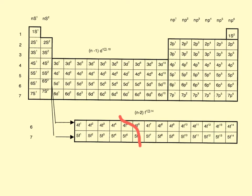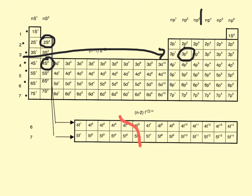Every element has a unique ending of the electron configuration. Whatever element is located here will finish with 2S2. Whatever element is located here will finish with 4S2. How do I know all the numbers? Because I need to count the rows — the periods. Whatever element is placed here will finish in P, because it is in block P, level 3. Block P.